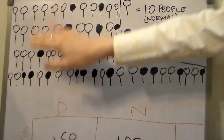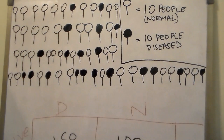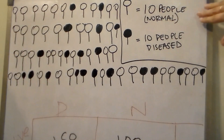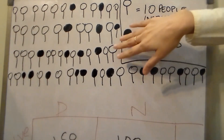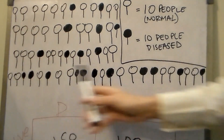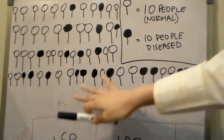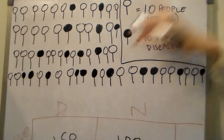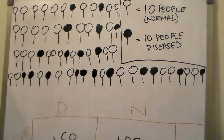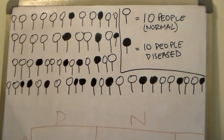This is our sample population. The clear figures represent 10 normal people, and the darker ones represent 10 diseased people, scattered amongst the normal people. This is the population on which we decide to test a new laboratory test, to figure out how good this new test is for being used as a screening test and as a diagnostic test.